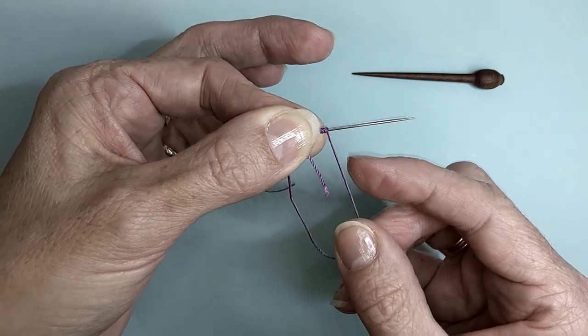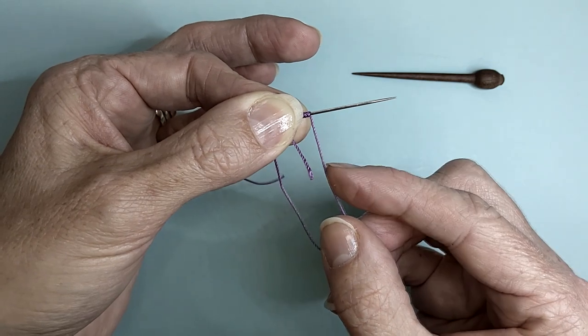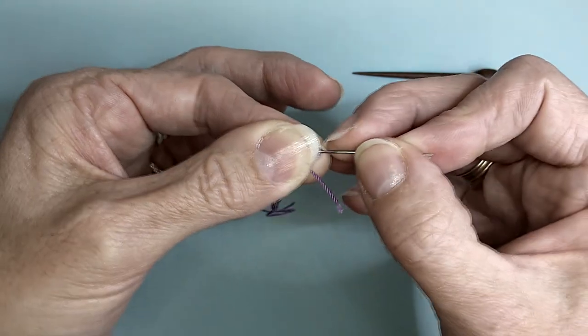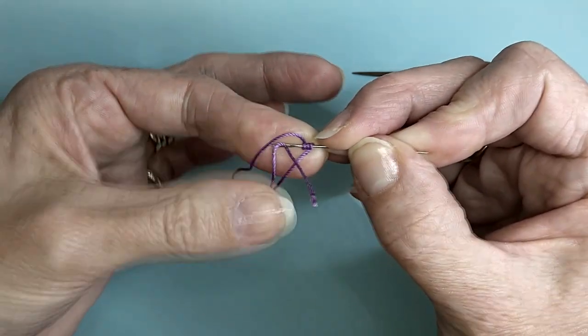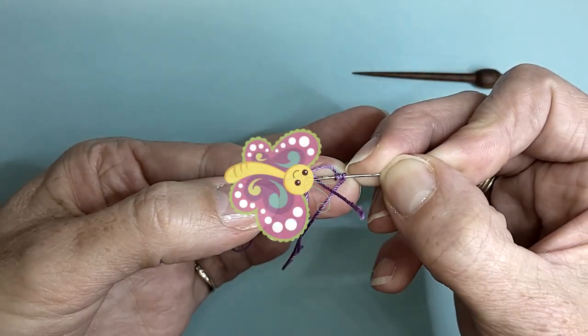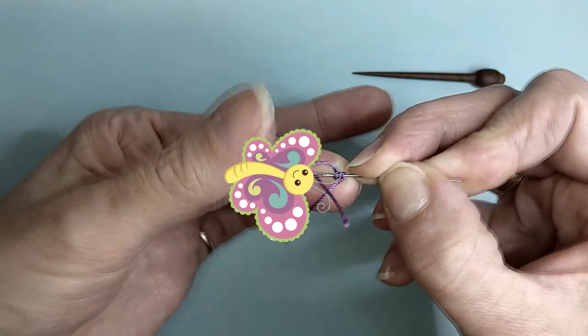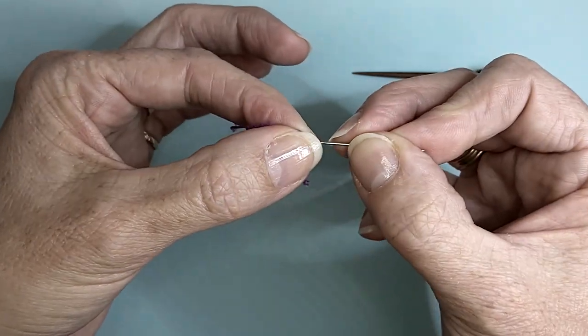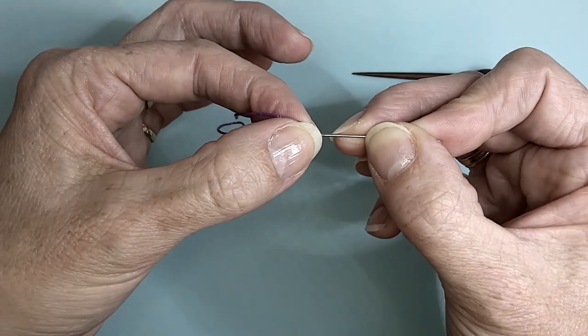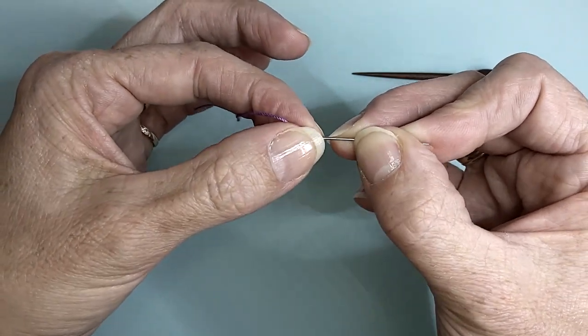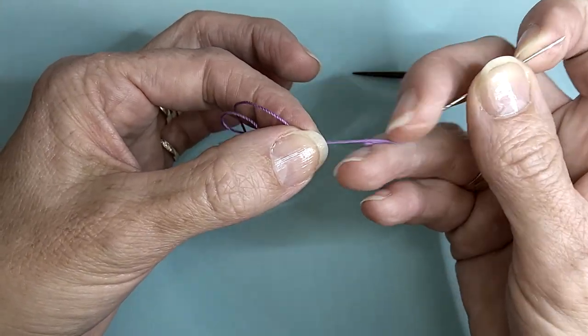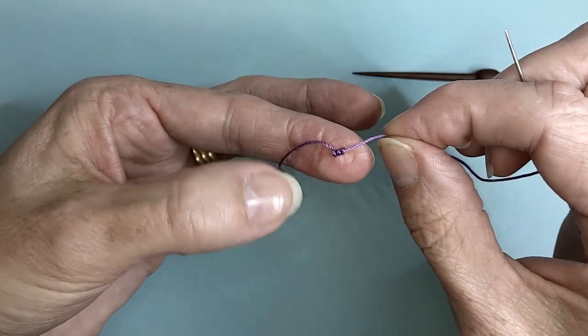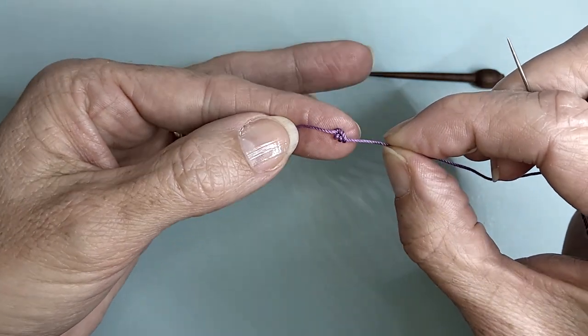This thread comes into the pinch. Holding the wraps between your fingers, pull the needle through and we have a three wrapped knot.